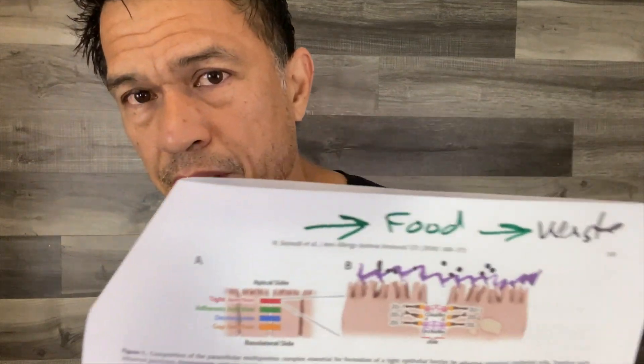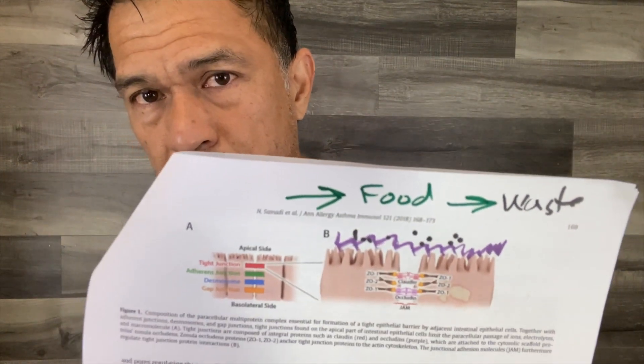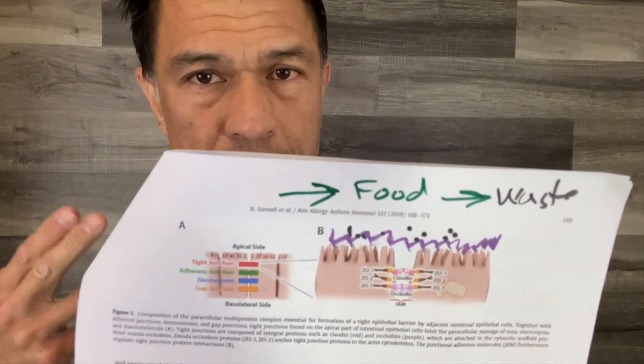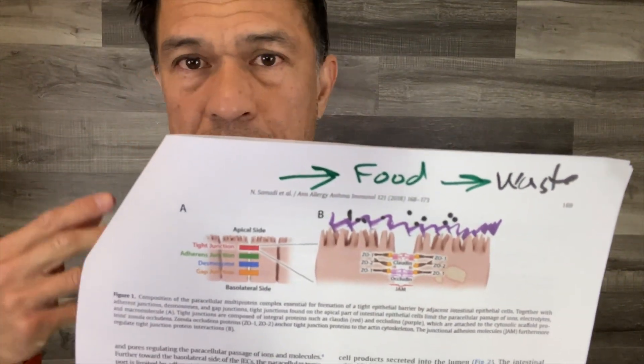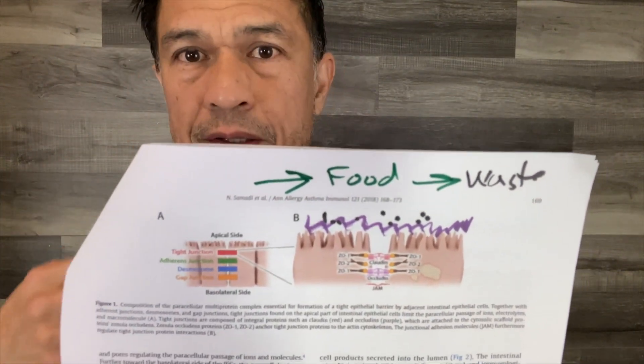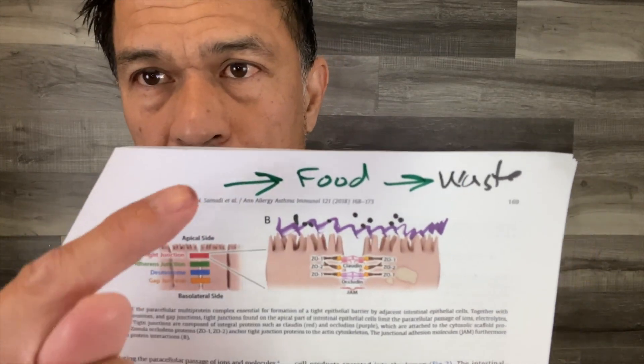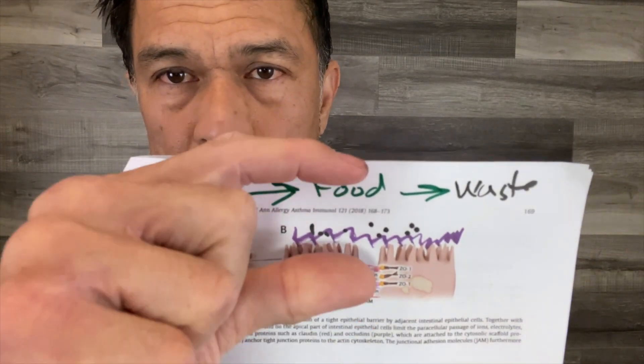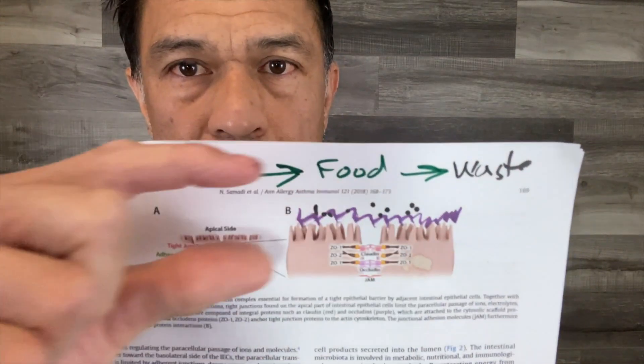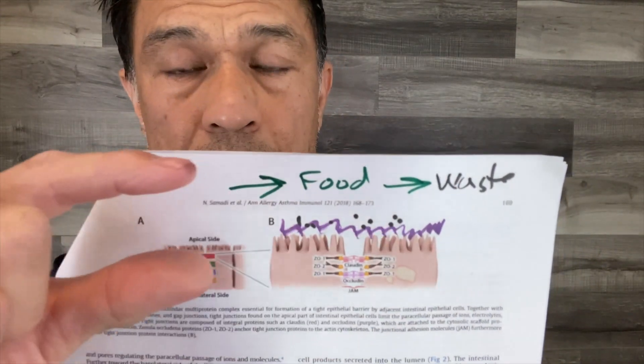If you've been watching my gut videos, I did some on allergies, leaky gut, autoimmunity. But essentially this is the lumen here — the tube that goes from mouth to butt.